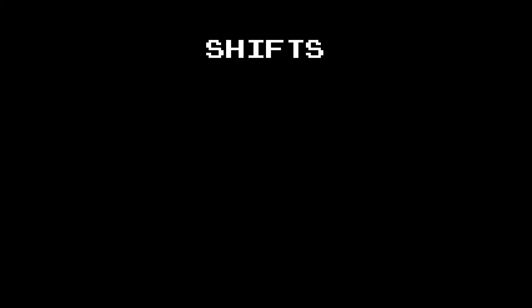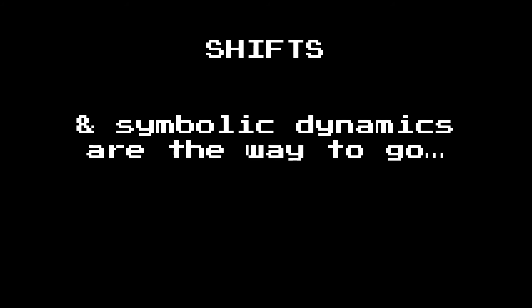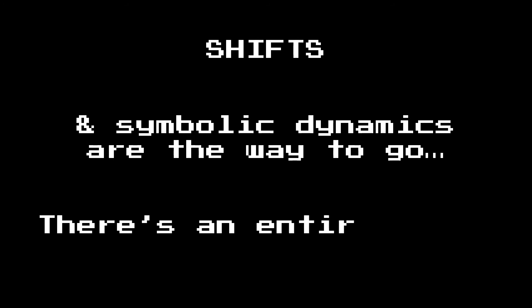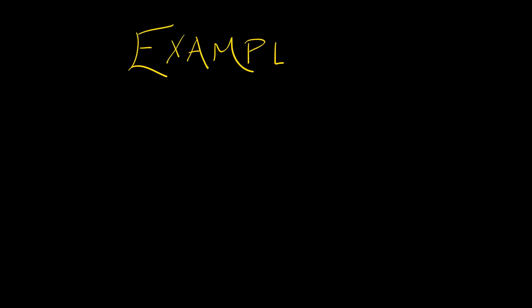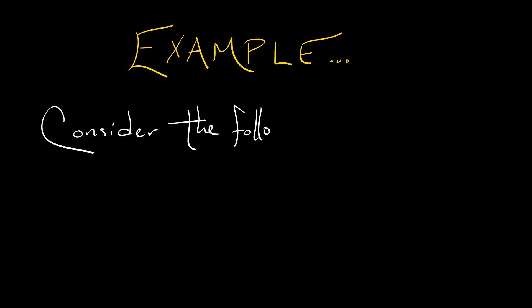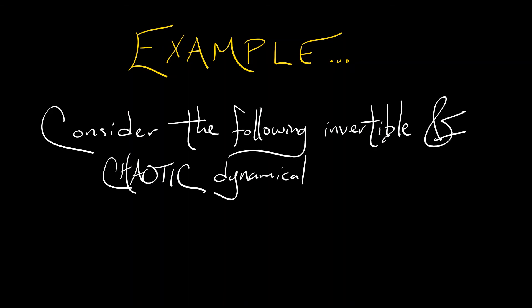When it comes to generalizations of the horseshoe map, shifts, and the symbolic dynamics that go with them, that's definitely the way to go to understand what's happening. But there's an entire world out there for us to consider. Let's start off with a motivating example: an invertible, chaotic, discrete-time dynamical system on the plane — just like the horseshoe, but a little bit different.